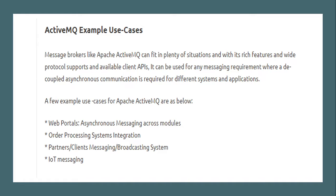So what are some of the use cases where ActiveMQ can fit in? A message broker like Apache ActiveMQ can fit in plenty of situations, and with its rich features, wide protocol support, and available client APIs, it can be used for any messaging requirements where decoupled asynchronous communication is required. A few example use cases include web protocols, asynchronous messaging across models, order processing, system integration, partner or client messaging, broadcasting systems, and IoT messaging.